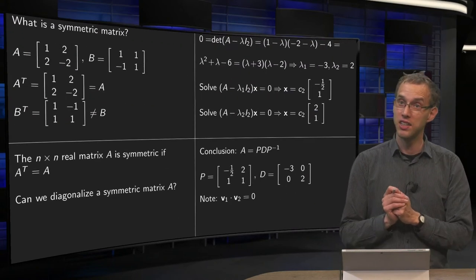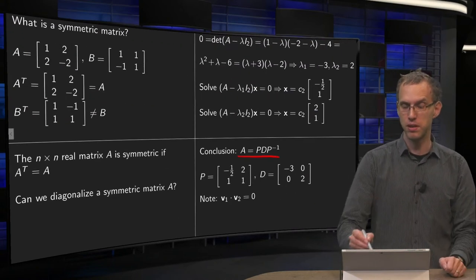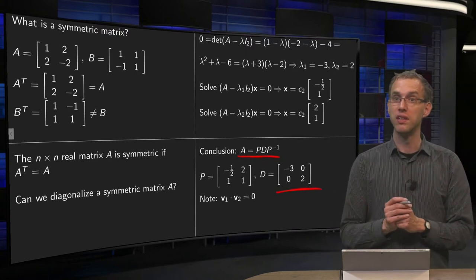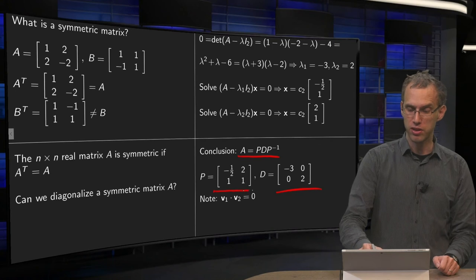So we indeed have a diagonalization of A, A equals P times D times P inverse, eigenvalues on the diagonal, and eigenvectors in the matrix P.